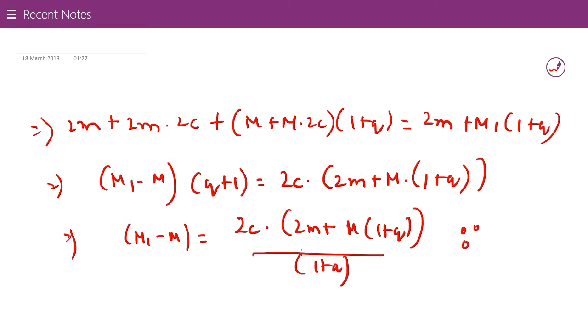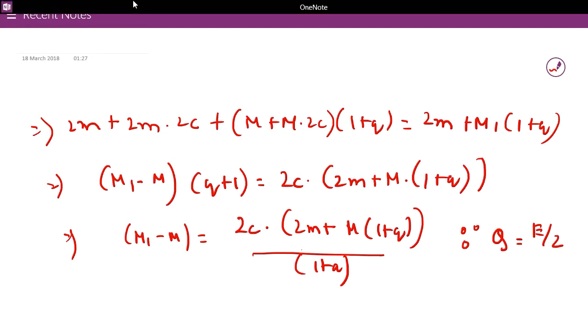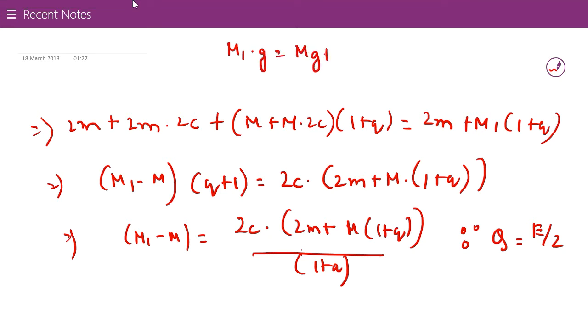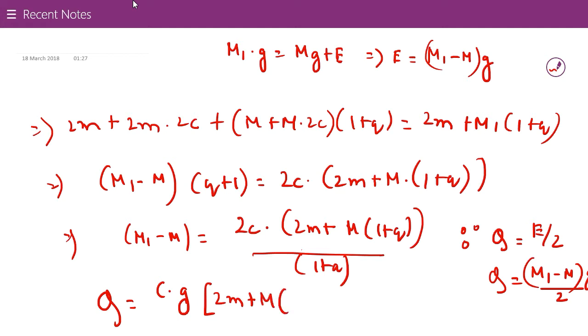As we know, your governor effort is capital Q equal to E/2. This capital E - the initial weight was Mg, then the downward force was applied to prevent the upward movement of the sleeve due to the reduction of the load. E will be nothing but (M₁ - M)G. So this becomes (M₁ - M)G/2. Since we now know what M₁ - M is, what will be Q?